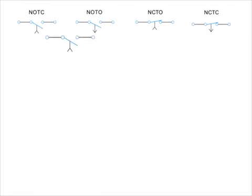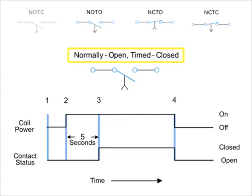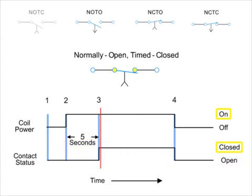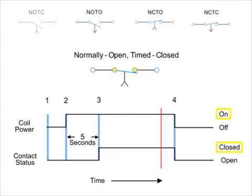First, we have the normally open, timed closed — NOTC — contact. This type of contact is normally open when the coil is unpowered or de-energized. After the coil has been continuously powered for a specified amount of time, in this example five seconds, the contact is closed. The contacts will immediately open when the coil is de-energized.